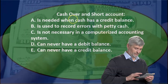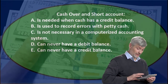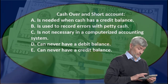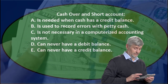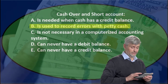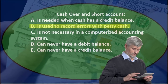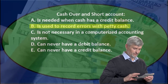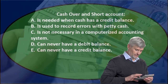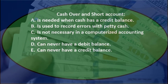So option A says it's needed when cash has a credit balance — that's not necessarily the case here because cash typically won't have a credit balance. We might credit cash, but it won't have a credit balance. So that's not it.